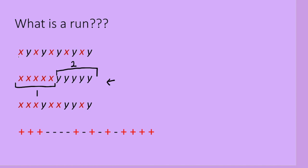Let's look at this example. How many RUNS are there? Counting through: 1, 2, 3, 4, 5, 6, 7, 8, 9, and 10. So the number of RUNS in this case would be 10 RUNS.